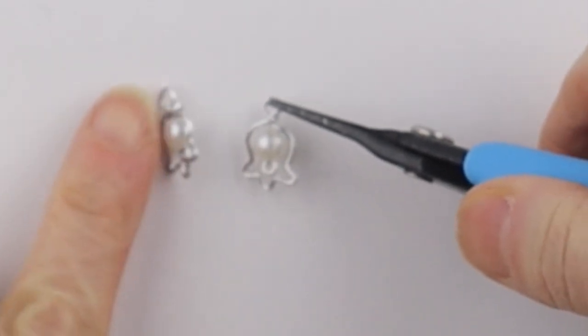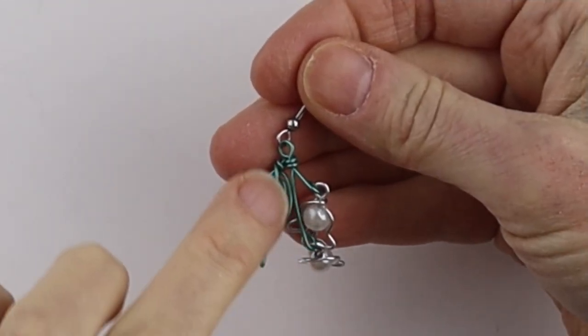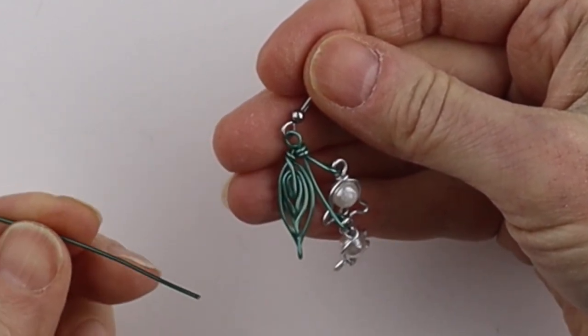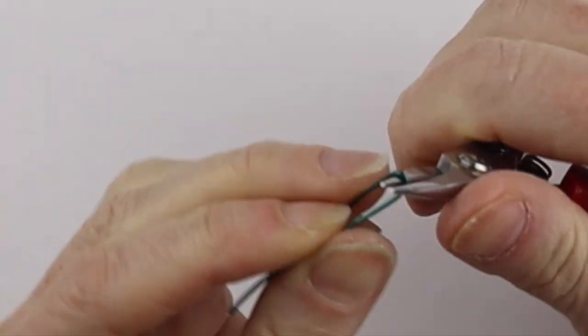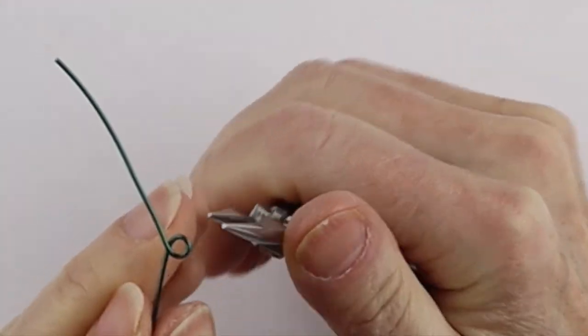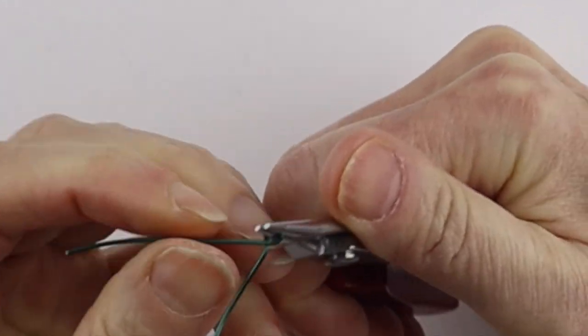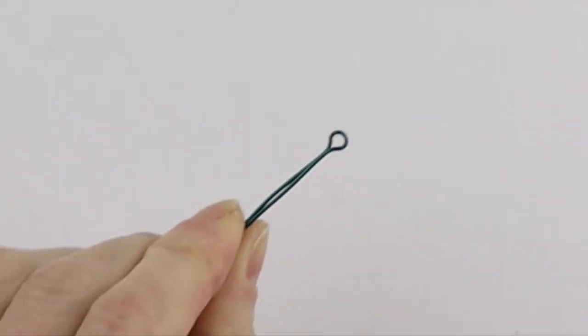I made another one. Now we're going to do the stem. First we'll do these two stems here with one piece of wire. Make the loop at the top first with your round pliers and bring it around. Then bring one down and the other one straight down.